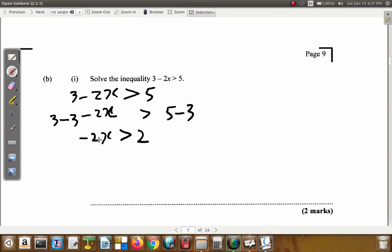Alright, so I've got rid of the 3. How do I get rid of the negative 2 now? Well, in this case, I would have to divide by negative 2. So, this over negative 2 and this over negative 2. Now, guess what will happen? When you say negative 2 over negative 2 is greater than 2 over negative 2. Once you divide or multiply an inequality by a negative, you must switch around the sign.